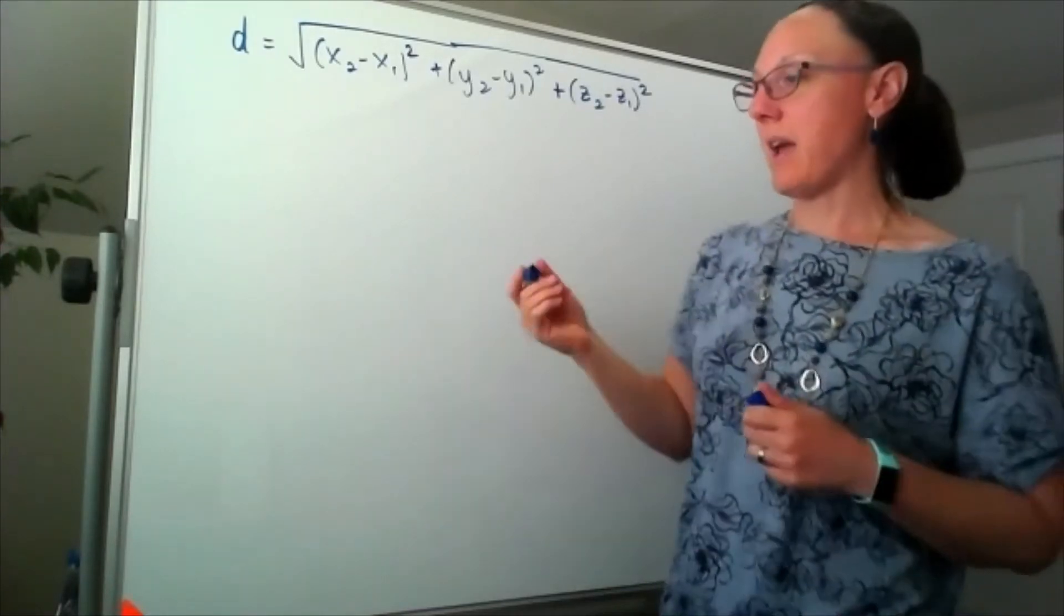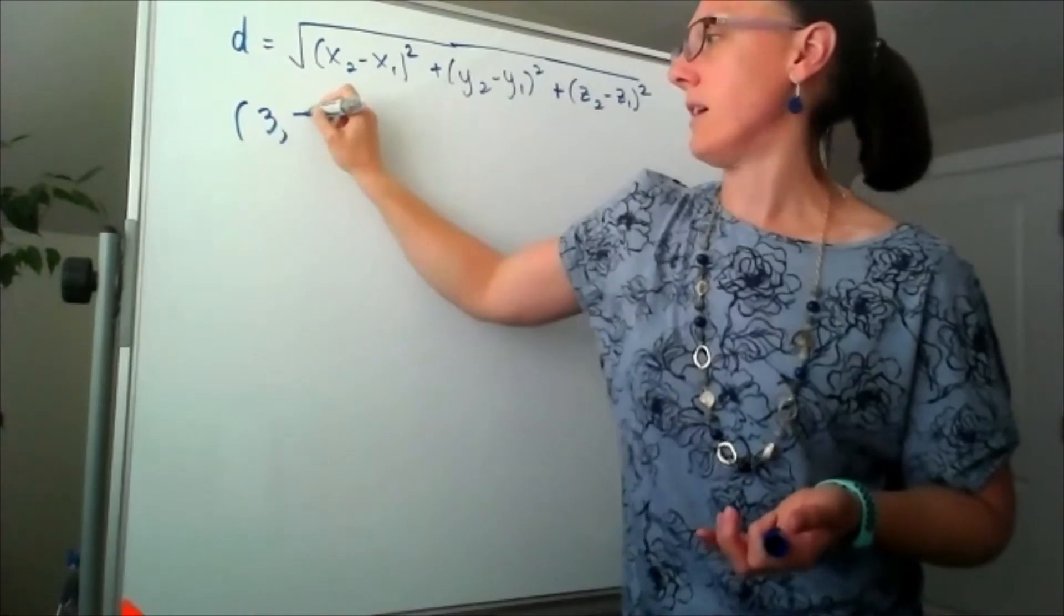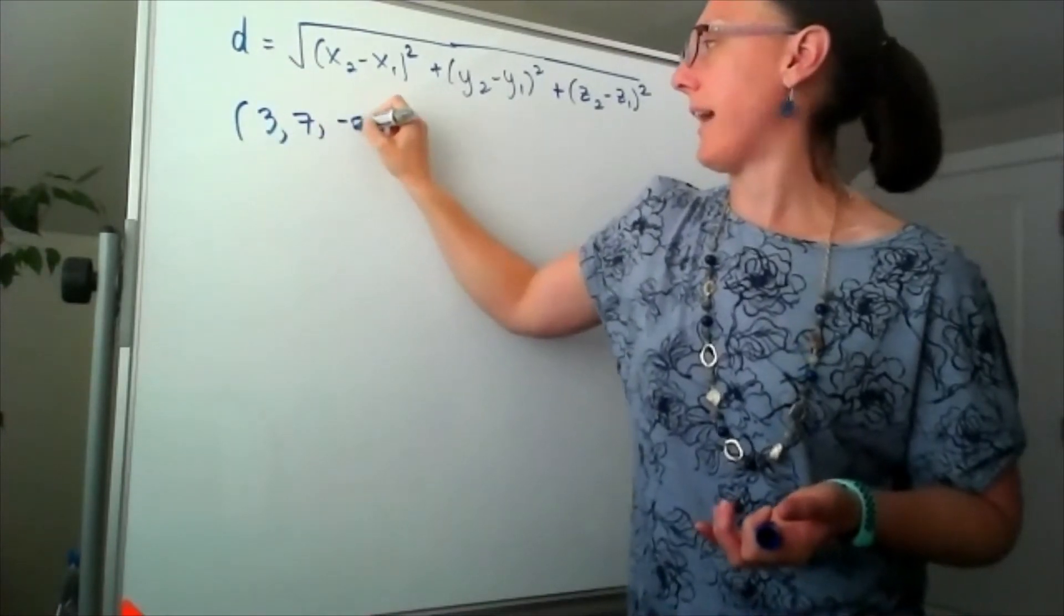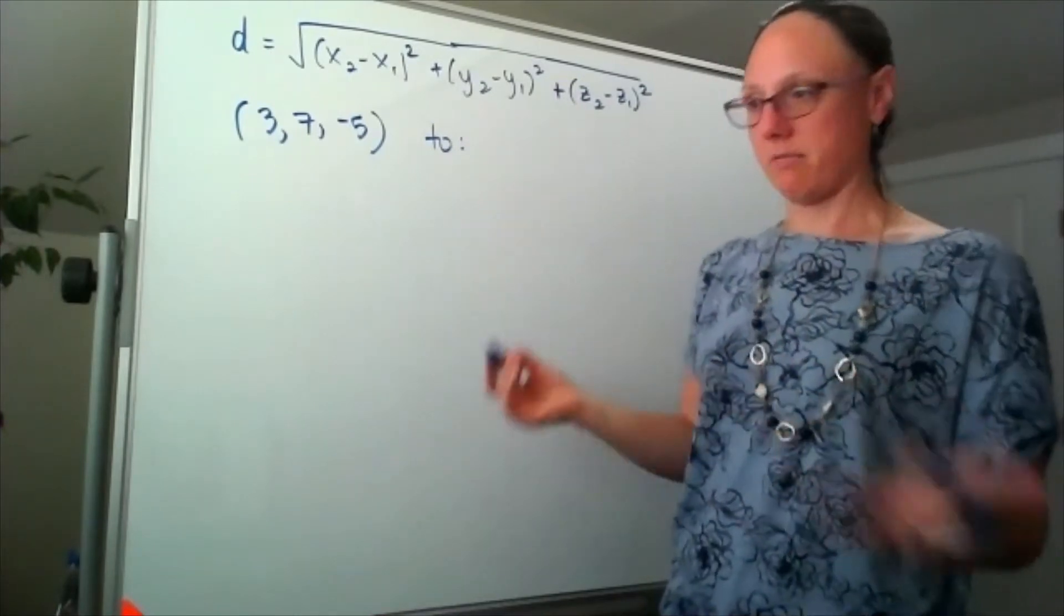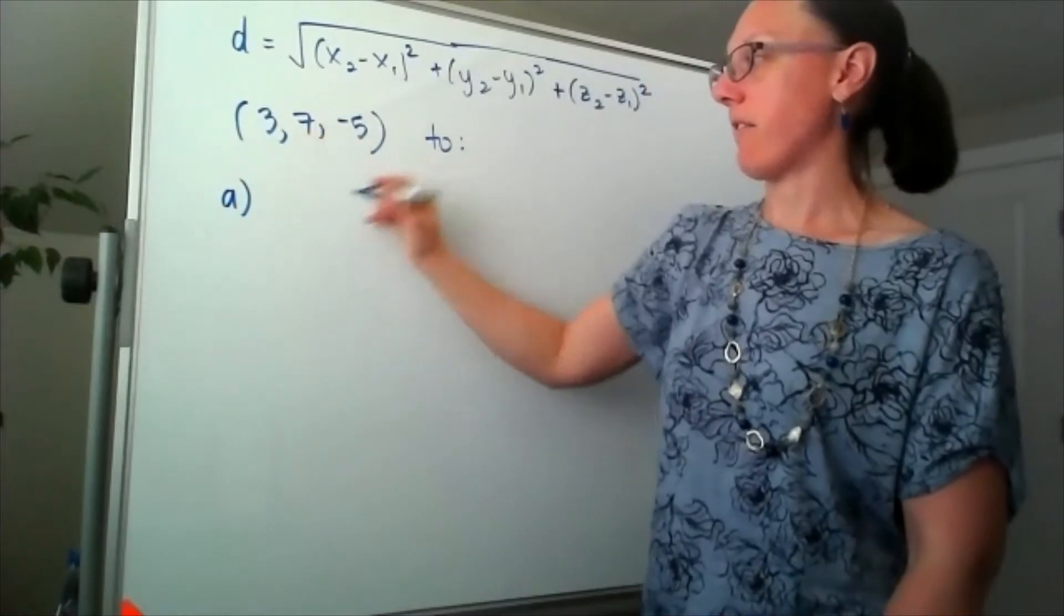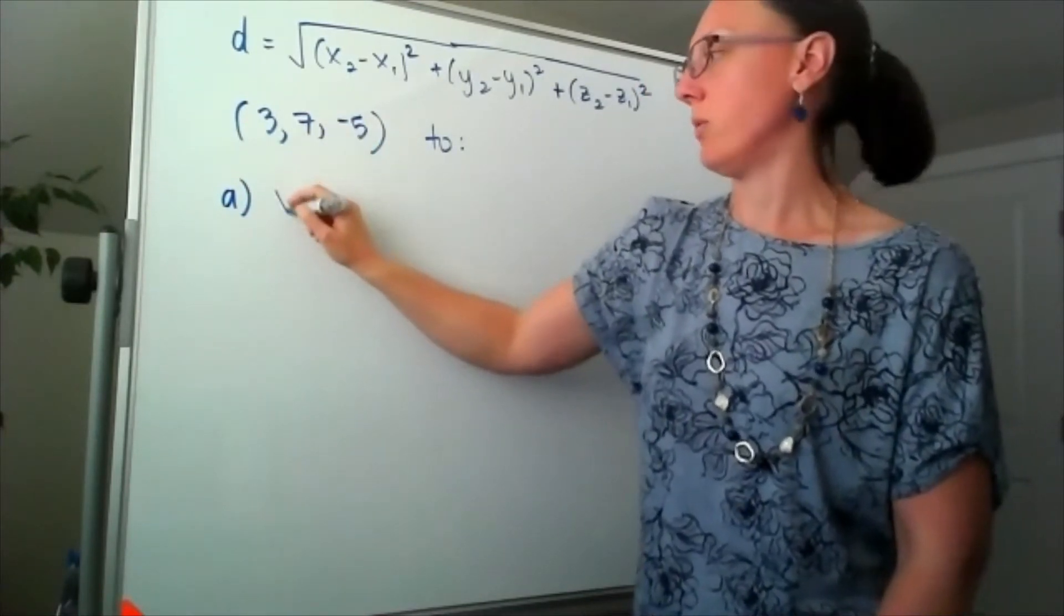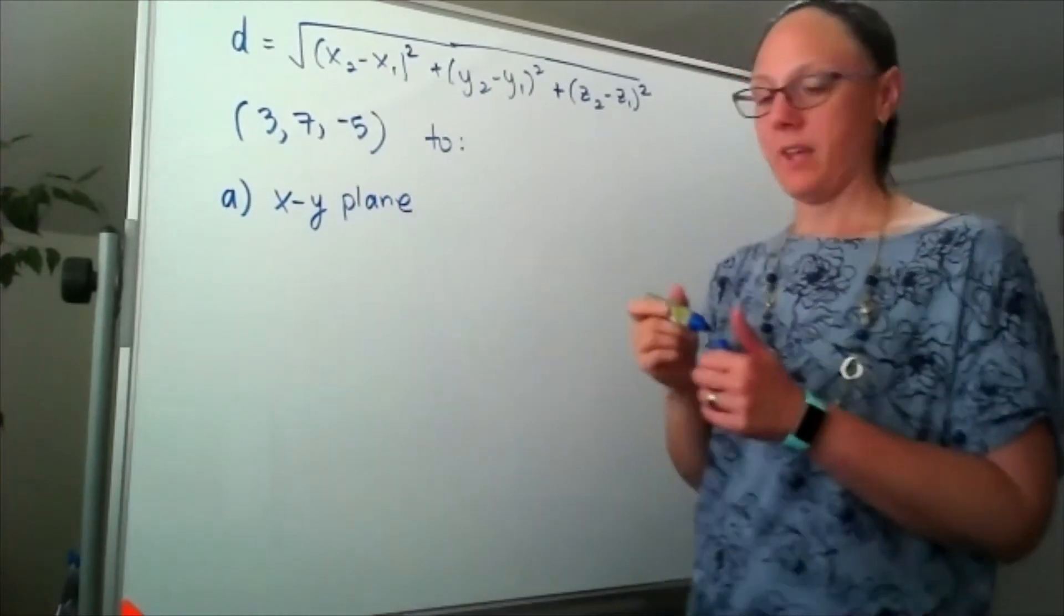So in problem 8, we're asked to find the distance from 3, 7, negative 5. And then there's all of these options. So part A says the distance from 3, 7, negative 5 to the xy plane.